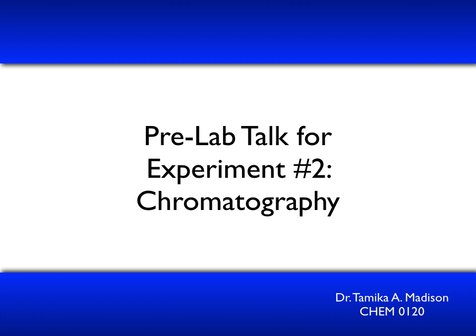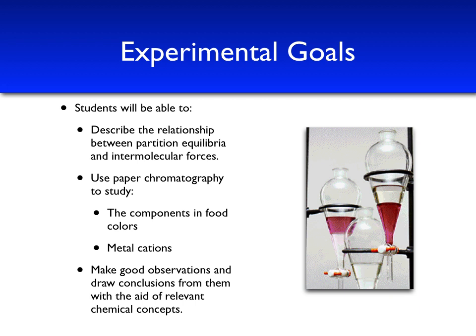This is the pre-lab talk for experiment number two for Chem 120 lab: Chromatography. The goals of this experiment are to help students describe the relationship between partition equilibrium and intermolecular forces. We will also use a new technique in preparing paper chromatograms to study the components of food colors and metal cations in solution. We will also practice making good observations and drawing conclusions from those observations with the aid of relevant chemical concepts.